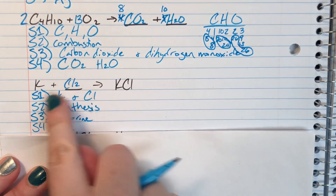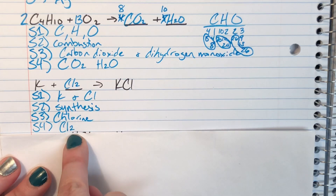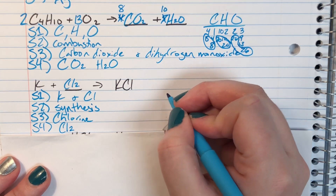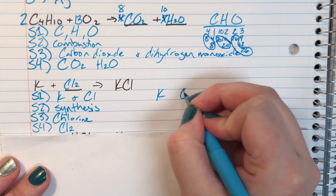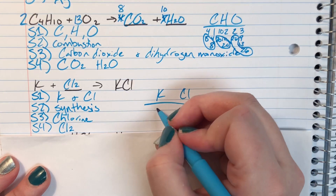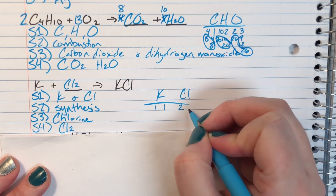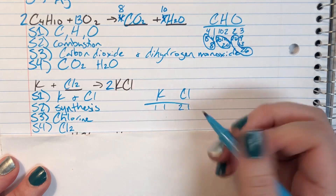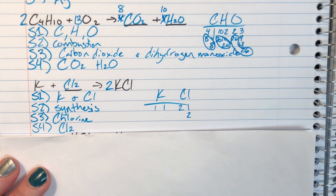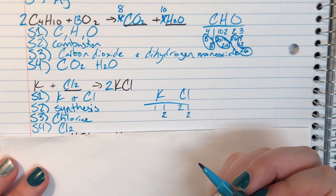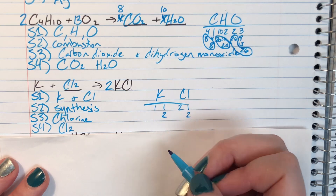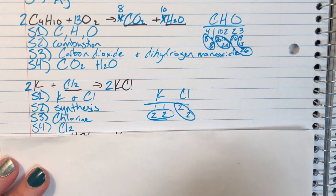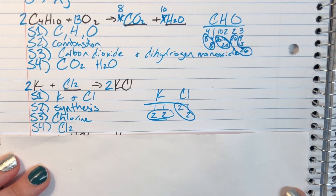Adding Cl2 to the equation, I make sure to include the subscript 2 — that's very important for balancing. Step five: I have potassium and chlorine to balance. Potassium left is 1, right is 1. Chlorine left is 2, right is 1. Only chlorine is off, so I multiply KCl by 2, bringing chlorine right to 2. That changes potassium right to 2 as well, so I add a coefficient of 2 in front of K to match both sides.